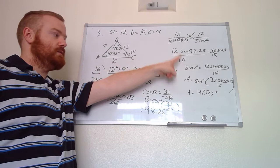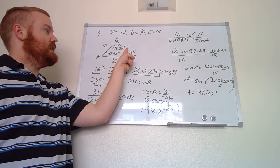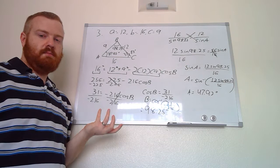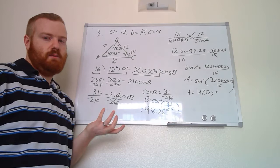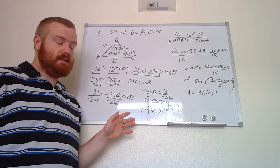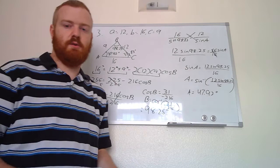Going back — we would have gotten the same angle if we had used the Law of Cosines again for angle A: 12² = 9² + 16² − 2(9)(16)·cos(A), solving for cos(A) and taking the inverse cosine gives the same result. So for consistency you can always stay with the Law of Cosines, but as long as you solve for the biggest angle first, you can switch to the Law of Sines for the remaining angles.